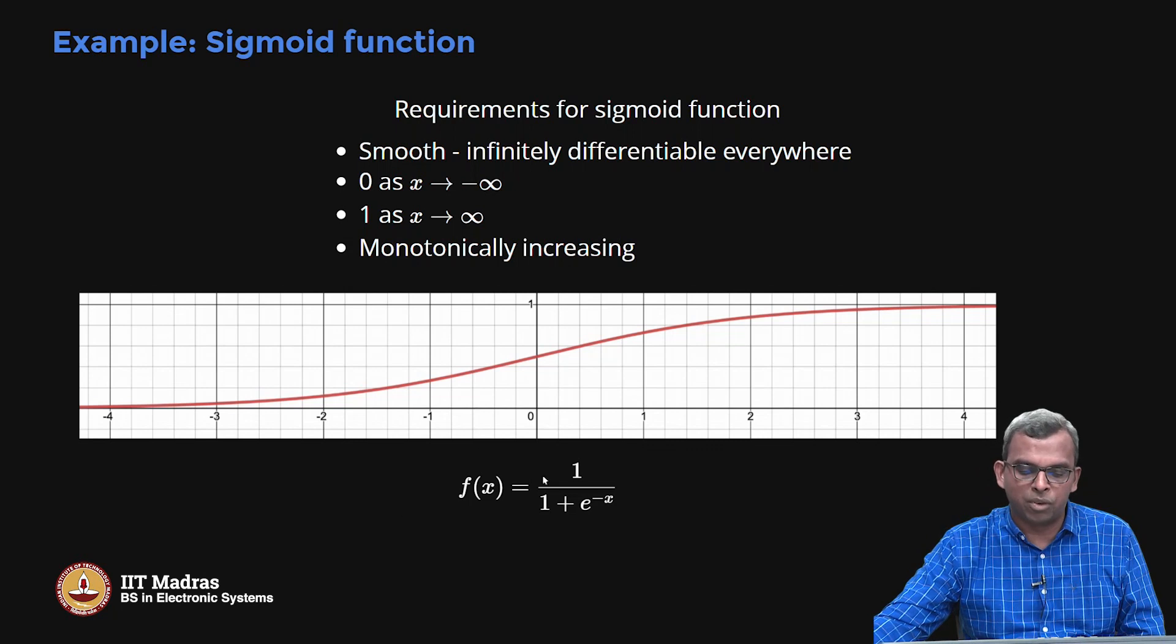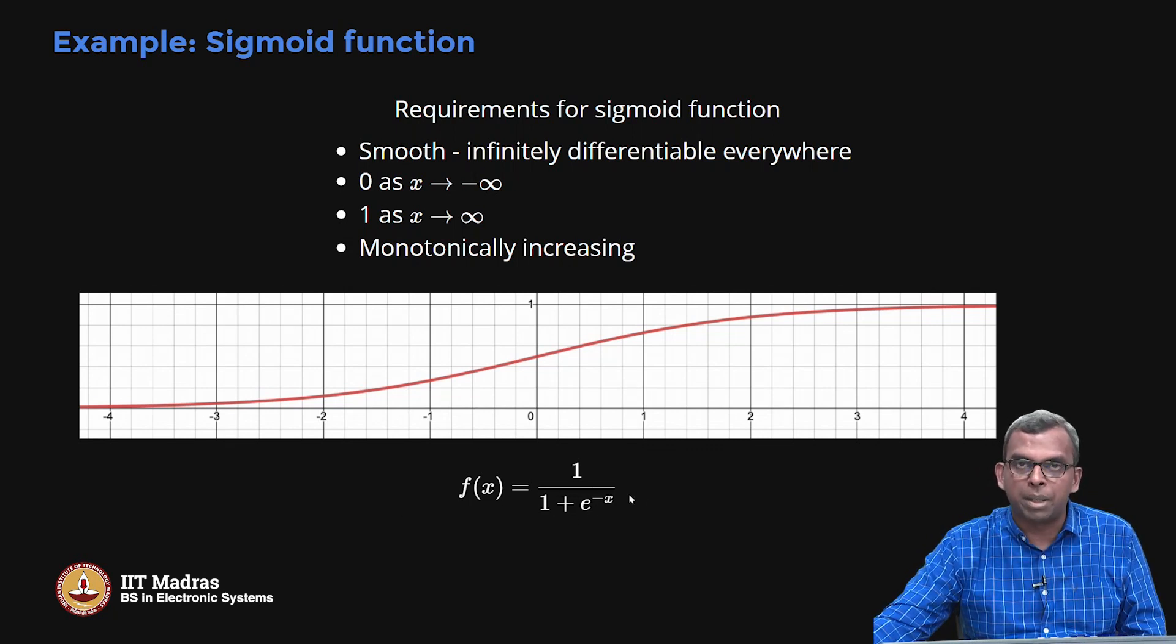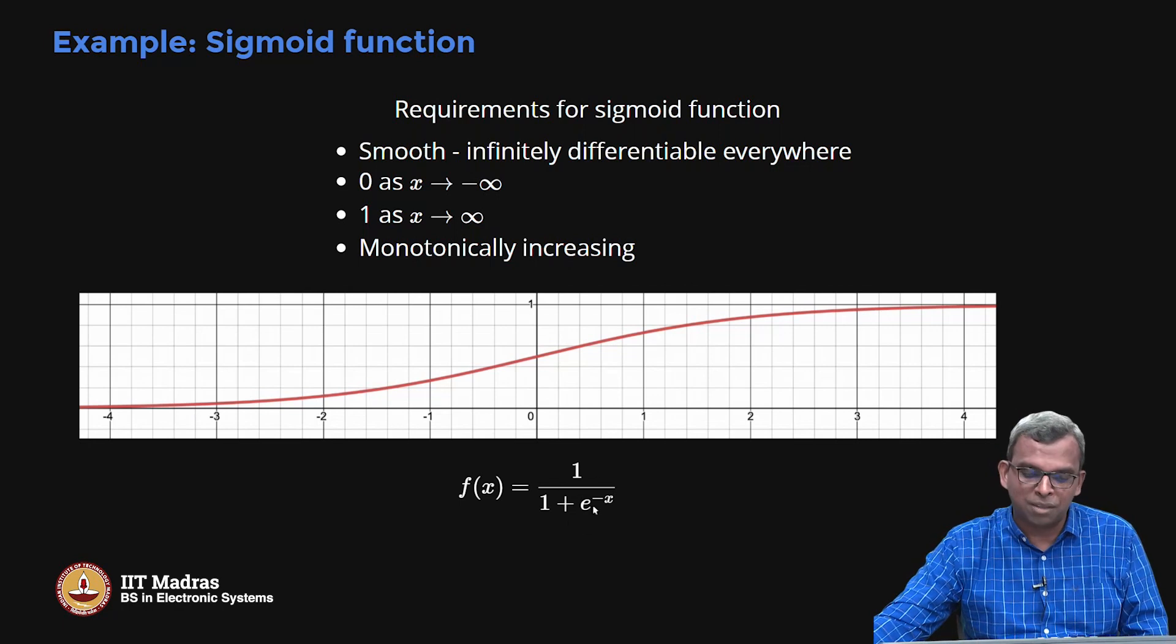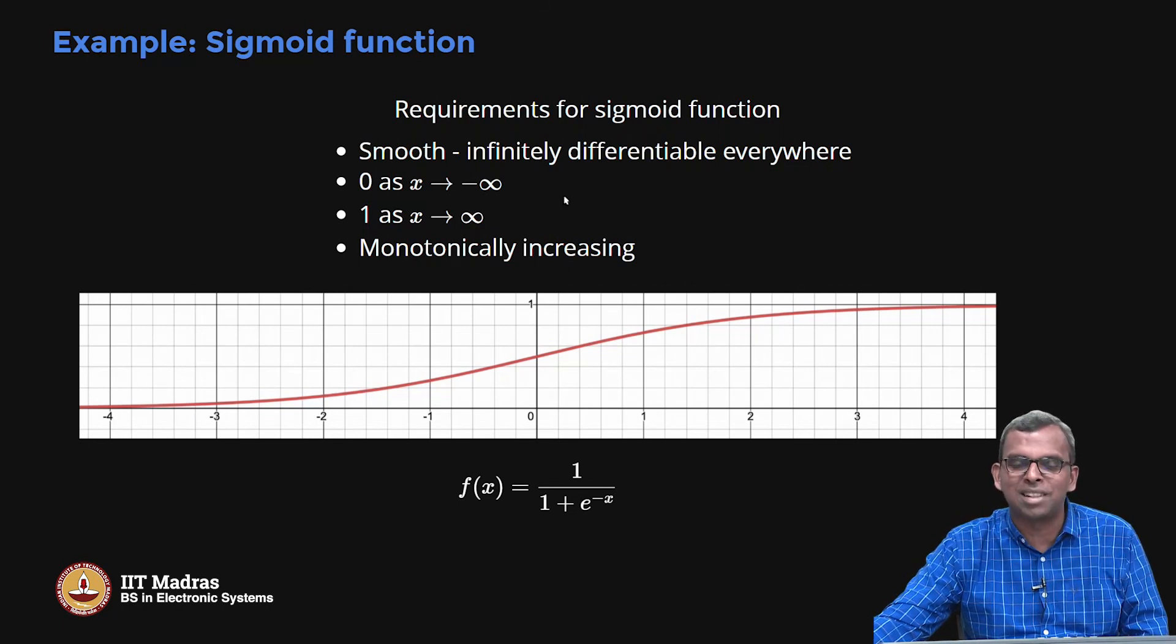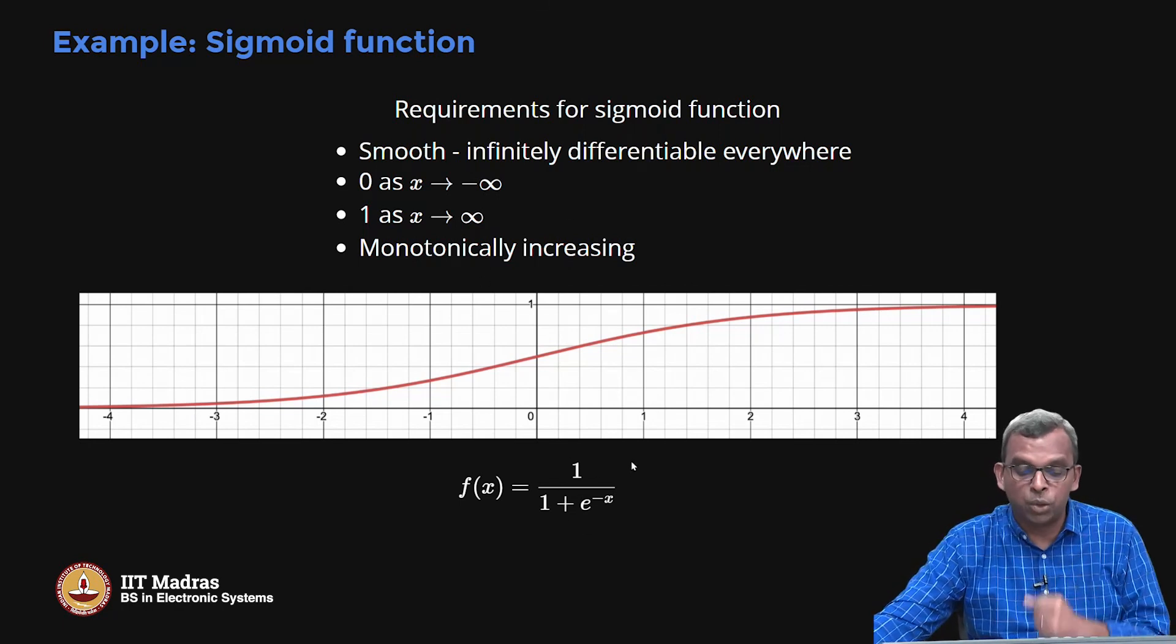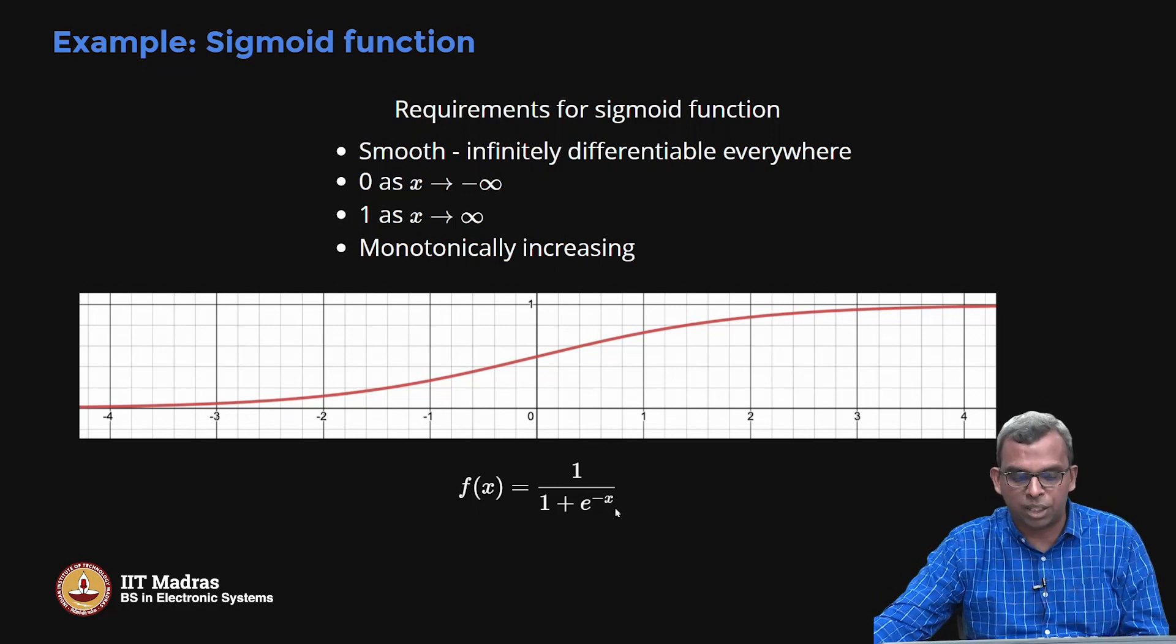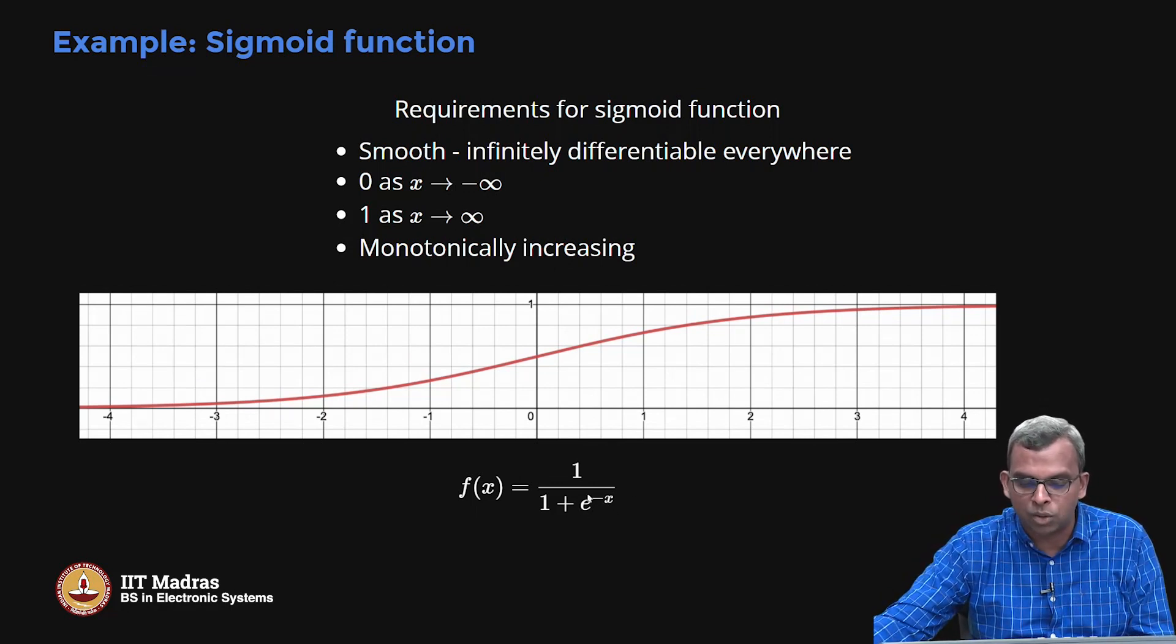It turns out here is a good formula for it. So this is the famous sigmoid function, 1 by 1 plus e power minus x. Would you have been able to cook up this function if only these descriptions are given? I am not sure. If you can do it, then you have already learnt a lot about this exponential function.